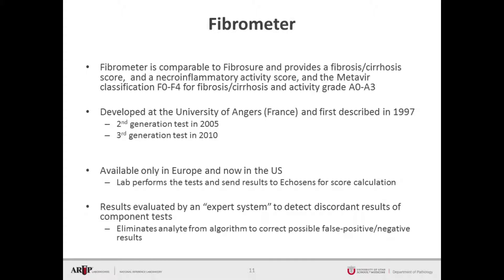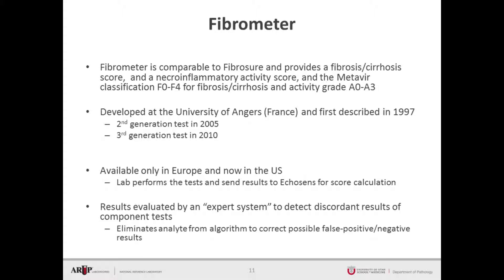FibroMeter is now available in the United States from Echosens, who also developed FibroScan — the FDA-approved method for transient elastography for non-invasive assessment of liver fibrosis. In addition, FibroMeter has an expert system or algorithm rule method that can detect which analytes are not within the reference interval and can eliminate those analytes from the algorithm, thus reducing the number of false positive or false negative results.